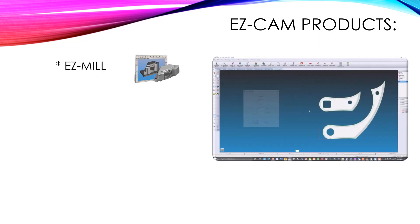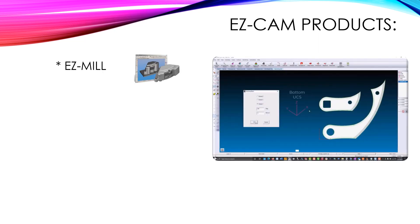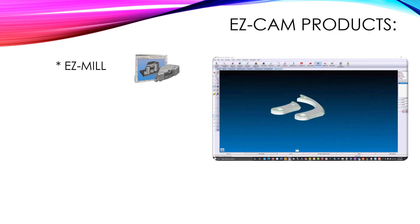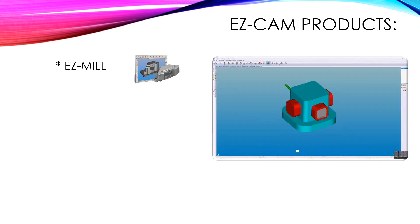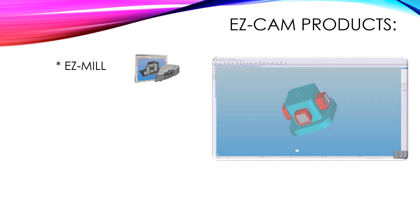EasyMill provides 2–4 axis simultaneous machining. There are 5 3D toolpaths available, not counting roughing operations.